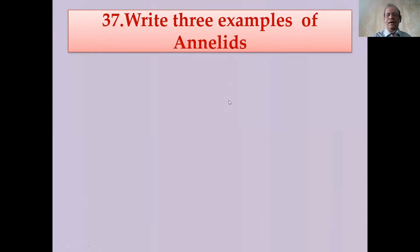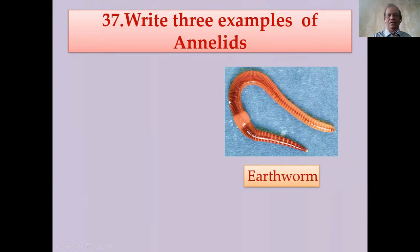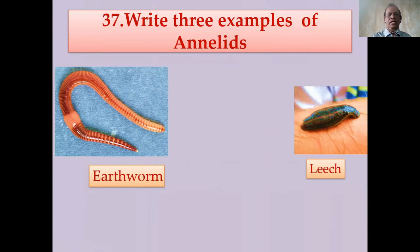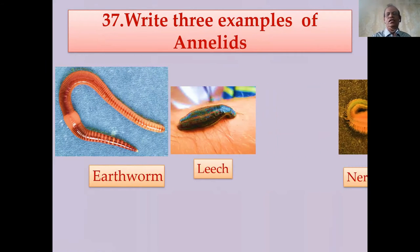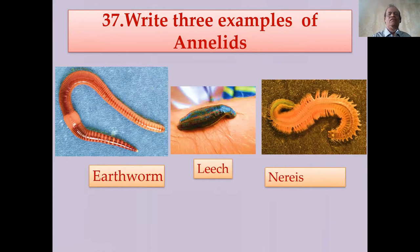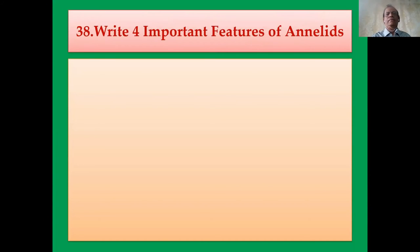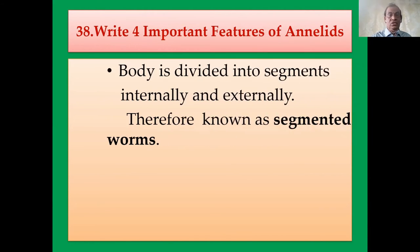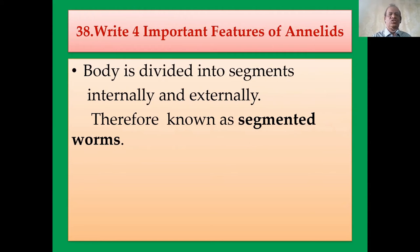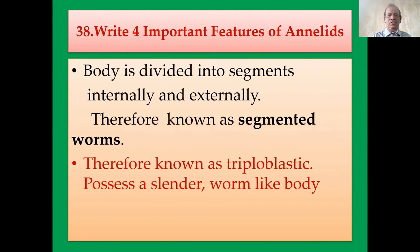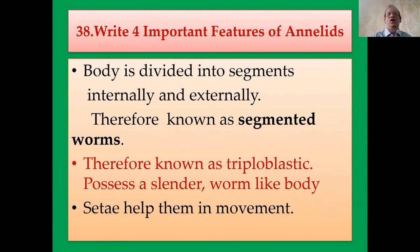Write three examples for Phylum Annelida: first, the earthworm; second, the leech; third, Nereis. Important features of Annelida: the body is divided into segments internally and externally — therefore they are known as segmented worms. They are triploblastic. The body is cylindrical or worm-like. Setae are found only in Annelida and help them in movement.